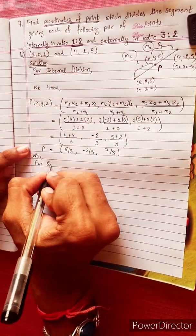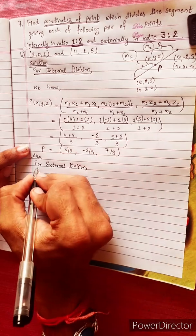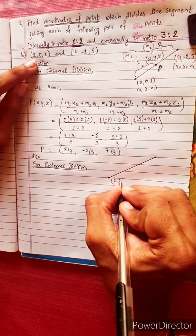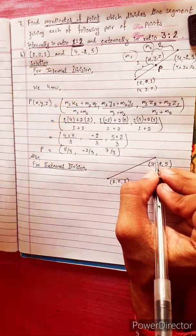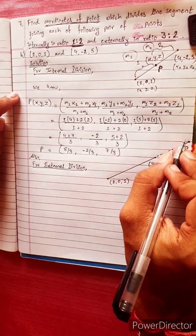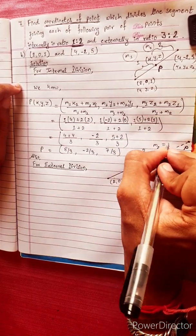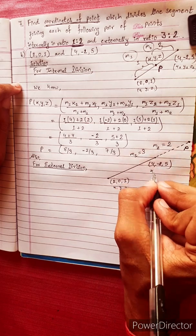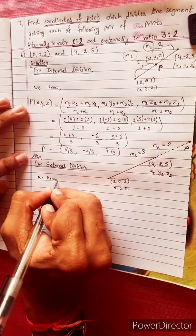Also, for external division, this is the formula. This is the line with the points. Suppose the first point is (2, 0, 1) and here is the second point. Point P is between them externally. The ratio is m1 = 3 and m2 = 2. The first point has coordinates x1, y1, z1 and the second point has coordinates x2, y2, z2.